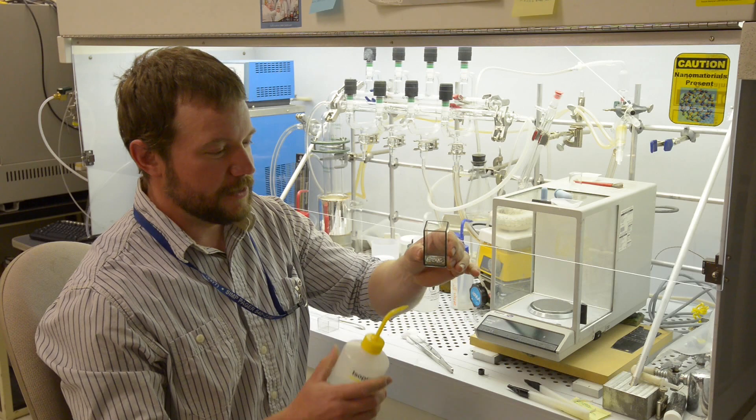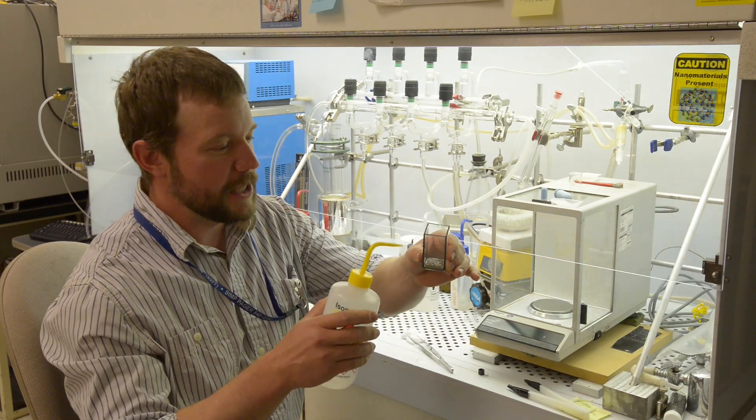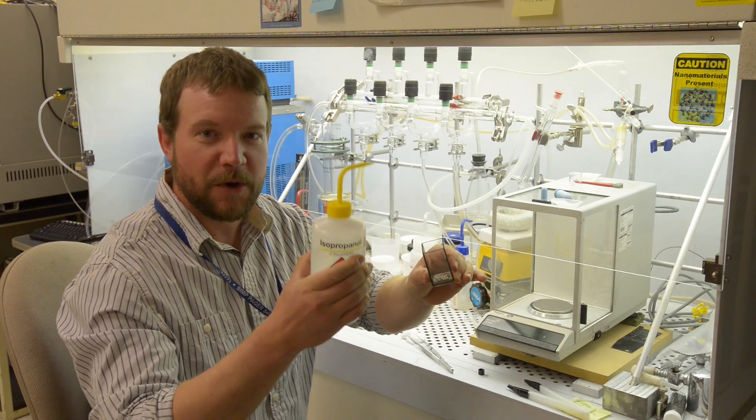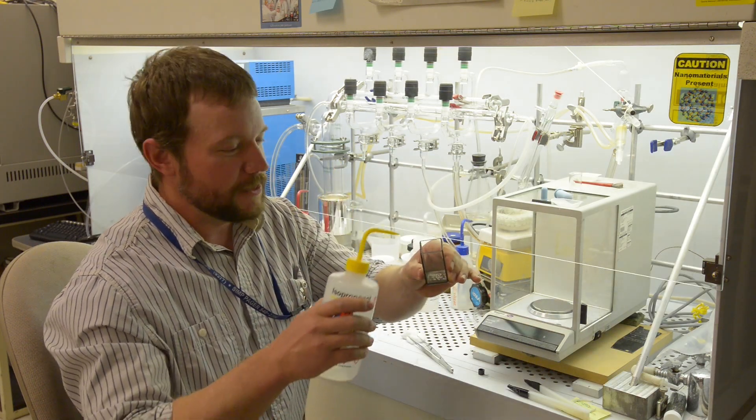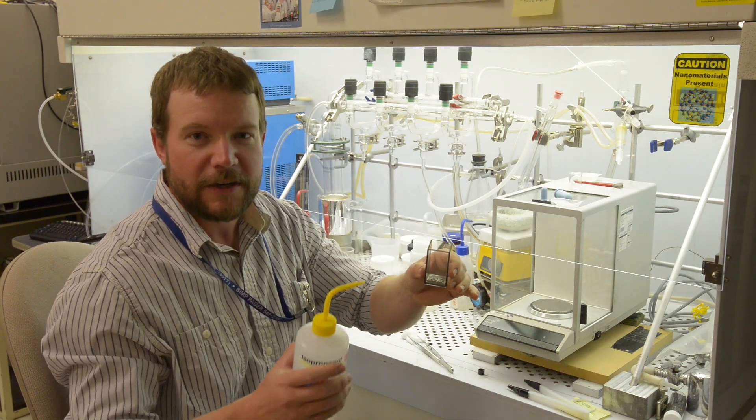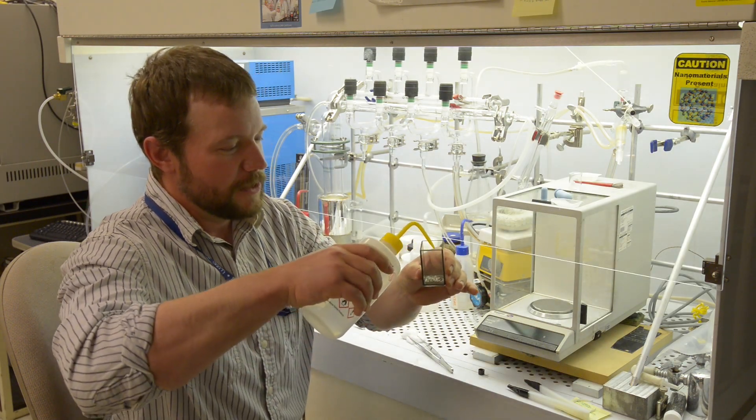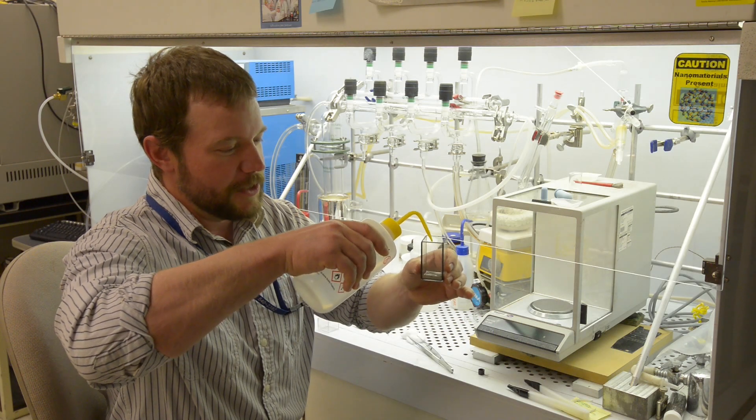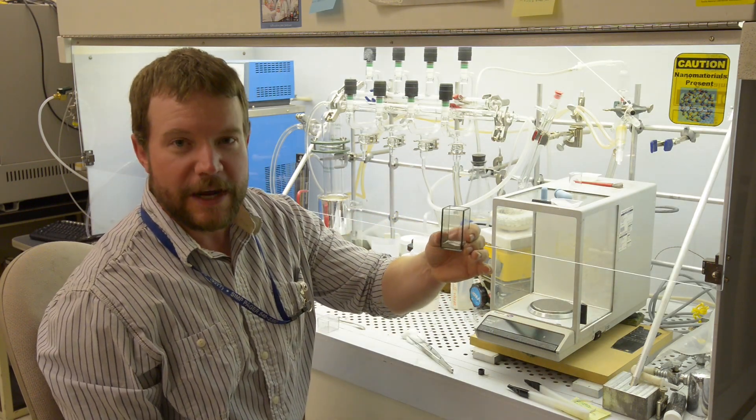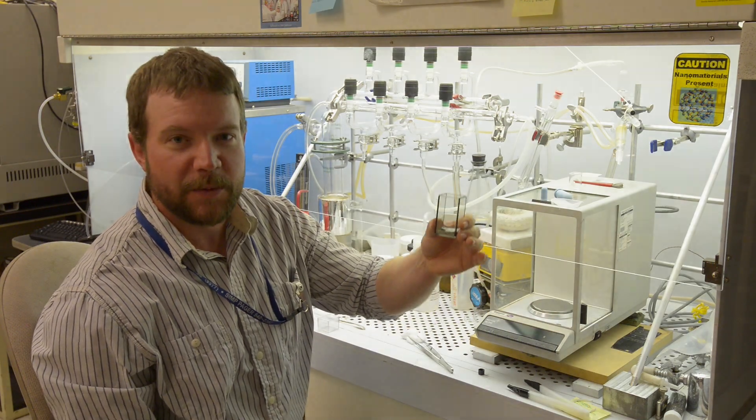We'll be adding some solvent to these platelets now. In this case today, we're just using some isopropanol—it's a good benign solvent. Any low viscosity solvent would work: aqueous solutions, water, and other alcohols. Typically, we just add enough that will bring the volume fraction of platelets up to a couple percent.